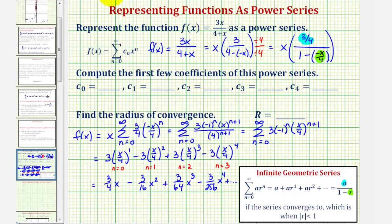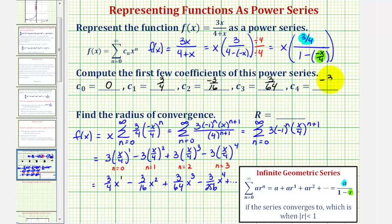Now let's find the coefficients. We need to be careful: c sub 0 represents the coefficient of the degree 0 term, or the constant term. There is no constant term in the power series, so c sub 0 is 0. c sub 1 is 3/4, c sub 2 is negative 3/16, c sub 3 is 3/64, and c sub 4 is negative 3/256. If terms are missing, some coefficients may be 0.